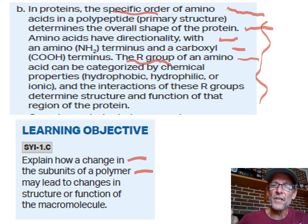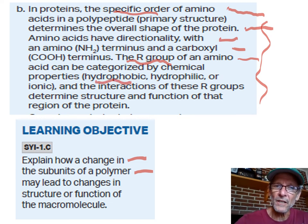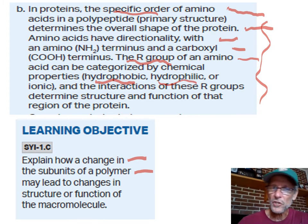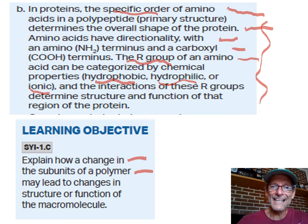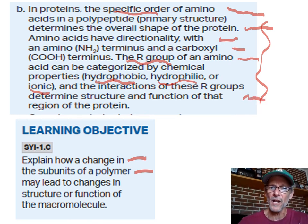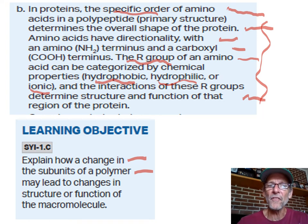That difference in the amino acids lies in the R group, because all the other parts are the same. This R group might give it properties of being not attracted to water or attracted to water — kind of like the lipid idea. Or maybe charge, which would also cause it to be attracted to water because it loses or gains electrons — it's ionic. The interaction of these R groups determines a lot about the structure, the conformation, the shape, and therefore the function of that part of the protein.